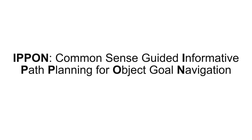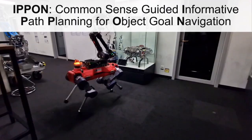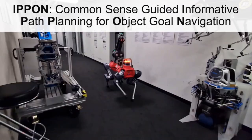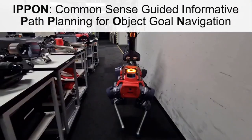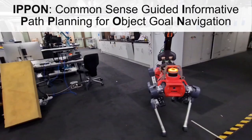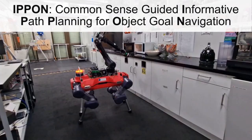We present our work, EPON, which stands for Common Sense Guided Informative Path Planning for Object Goal Navigation. The object goal navigation problem is defined as finding an object in an unknown environment using only a single RGBD camera. For example, navigating a challenging environment to locate a microwave oven.